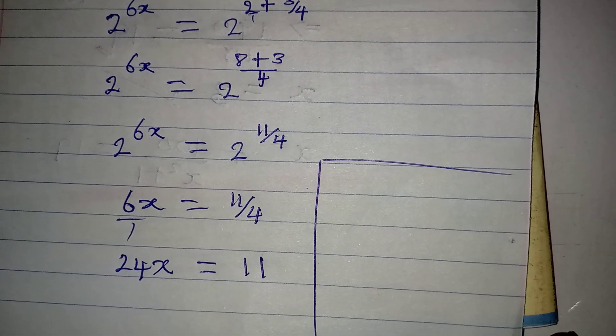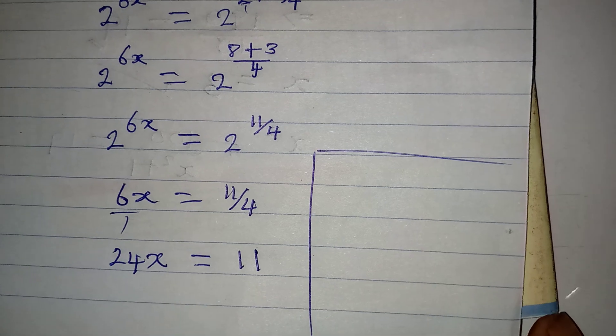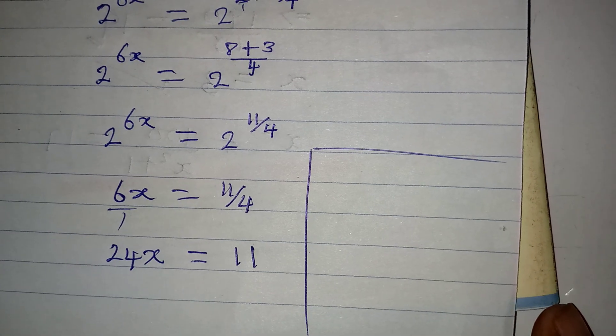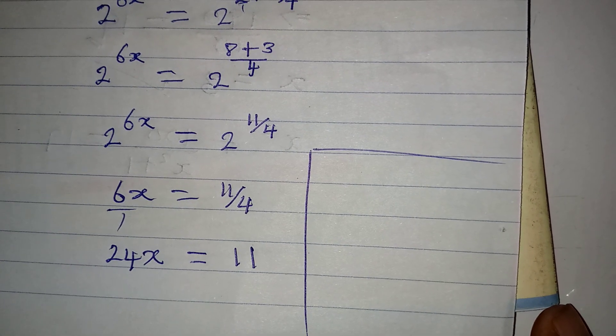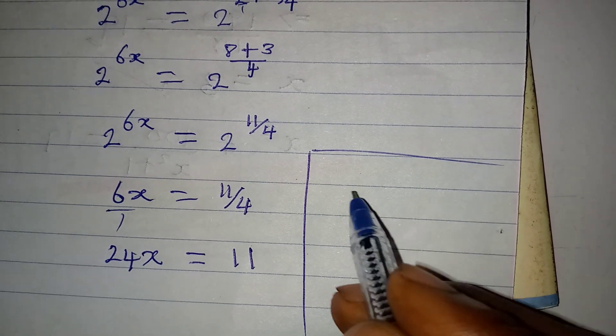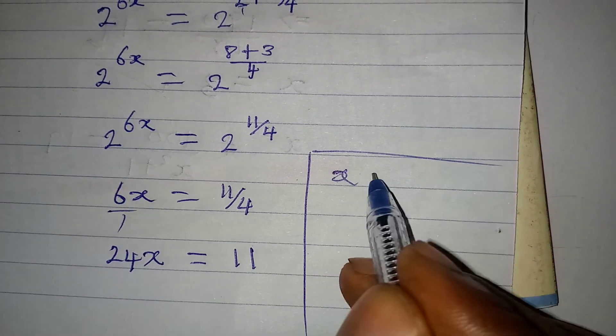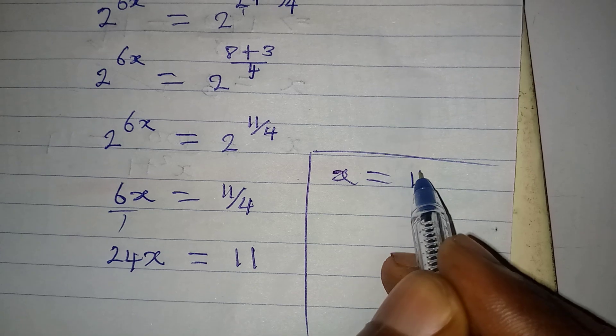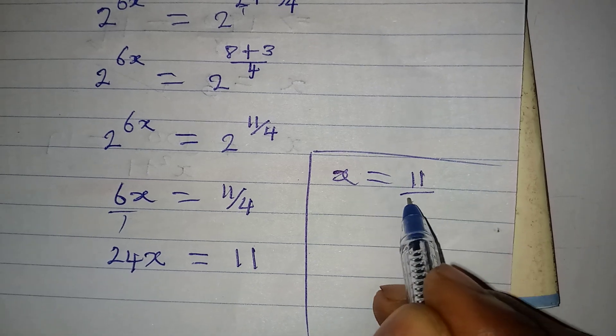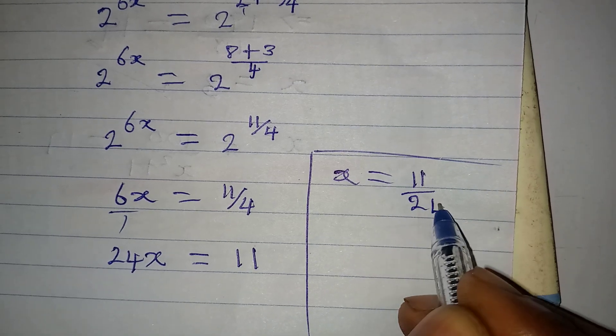Dividing both sides by 24, x is equal to 11 over 24.